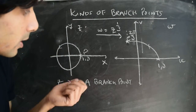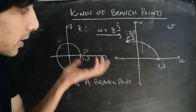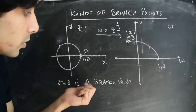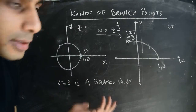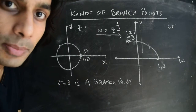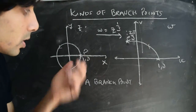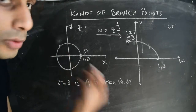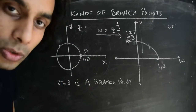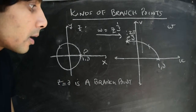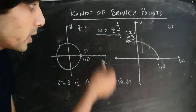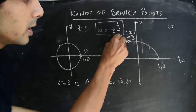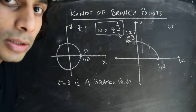We argued that in the finite z-plane, z equal to 0 is basically the only branch point enclosed in any loop that you make around the origin. So z equal to 0 is a branch point for the mapping w equals z to the power of 1/3.